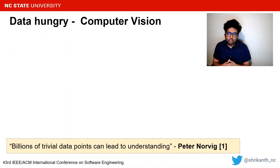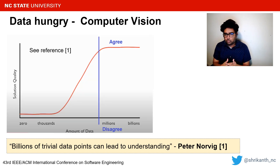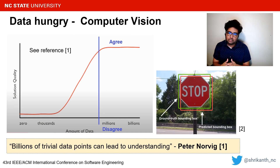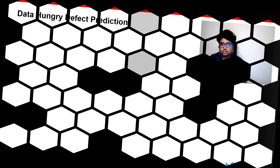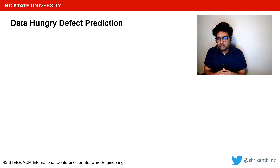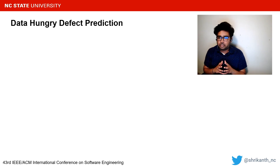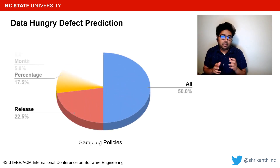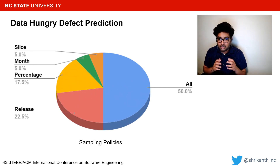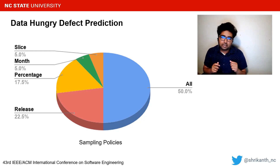Norvig's claim is supported with numerous examples from vision research. While we agree with the y-axis that solution quality could attain a saturation point beyond a certain amount of data, we question the amount on the x-axis. We looked at software engineering literature about sampling policies in defect prediction published in the past decade, noting a remarkably diverse number of sampling policies that have not been systematically and comparatively evaluated. Not only are researchers hungry for data, but they are also hungry for the most recent data.